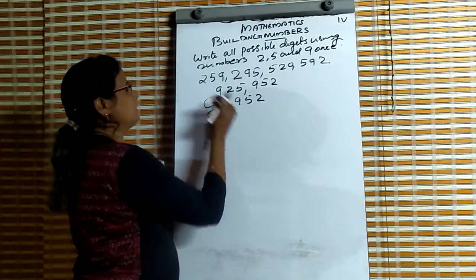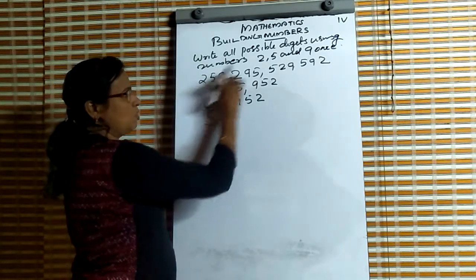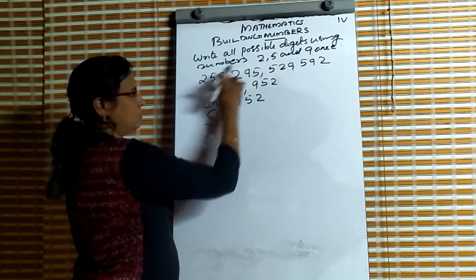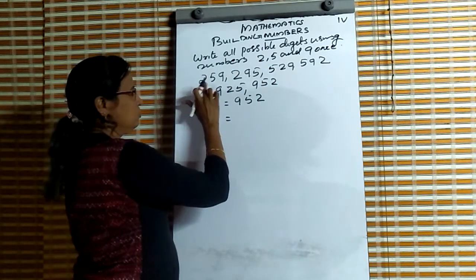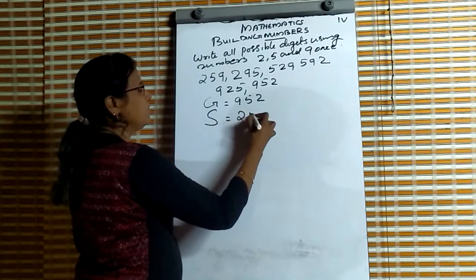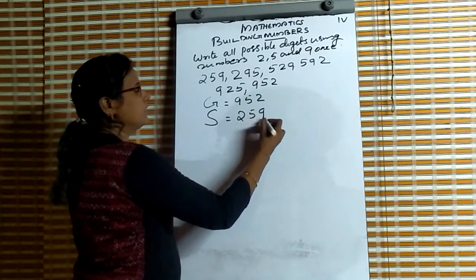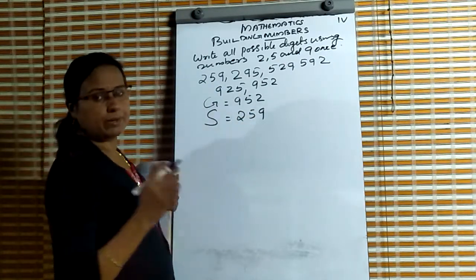And which is the smallest number? The smallest number starts in 2. Then 5, then 9. So 259 is the smallest number.